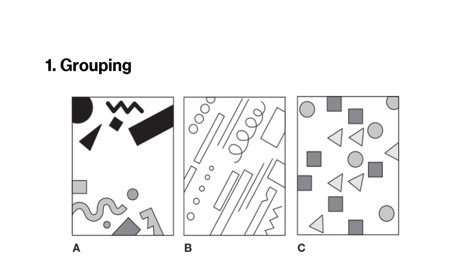Tell me about the grouping that you see in A, the leftmost box. How many groups are there? Two. How do you know? Because of where they are — they are visibly separated, a top group and a bottom group. And the color: one is a really, really dark value group, and one is a neutral or lighter value group — black and gray.